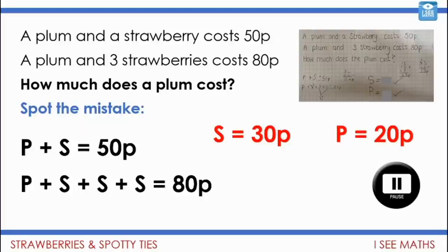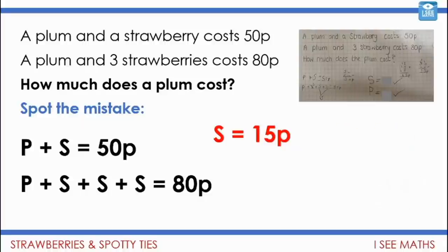Let's have a look and see if we can find it. So, well, let's say here, actually, the strawberry must be 15p because it is correct that the difference between 50p and 80p is 30p. But of course, that's for two extra strawberries. So each one must be 15p.